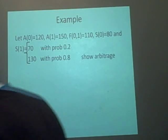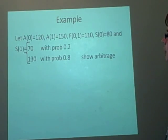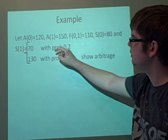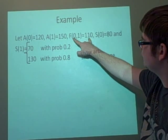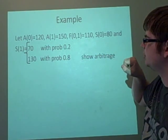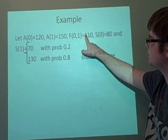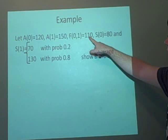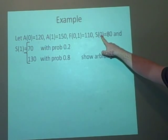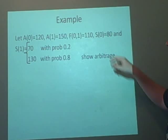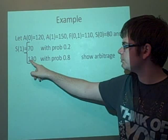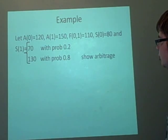Now all that stuff's out of the way, we've got an example. So we've got the Bond Price at nought is 120, at time one is 150. Our Forward Contract is when we're going to get the Stock - it's going to give us 110 at time one. The Stock at the original time is 80. So it can either go down to 70 with probability 0.2 or up to 130 with probability 0.8. We want to show an arbitrage situation.